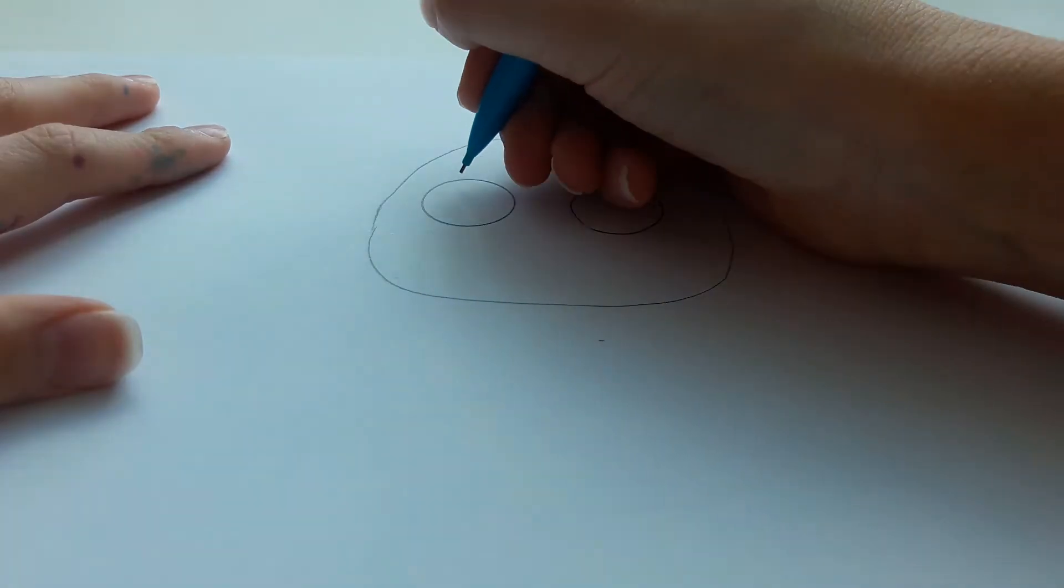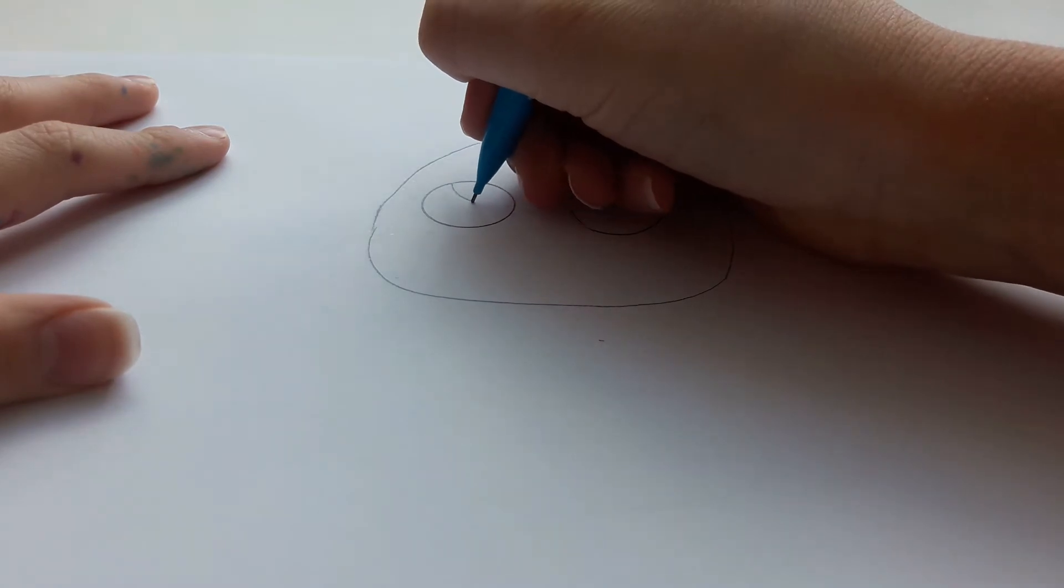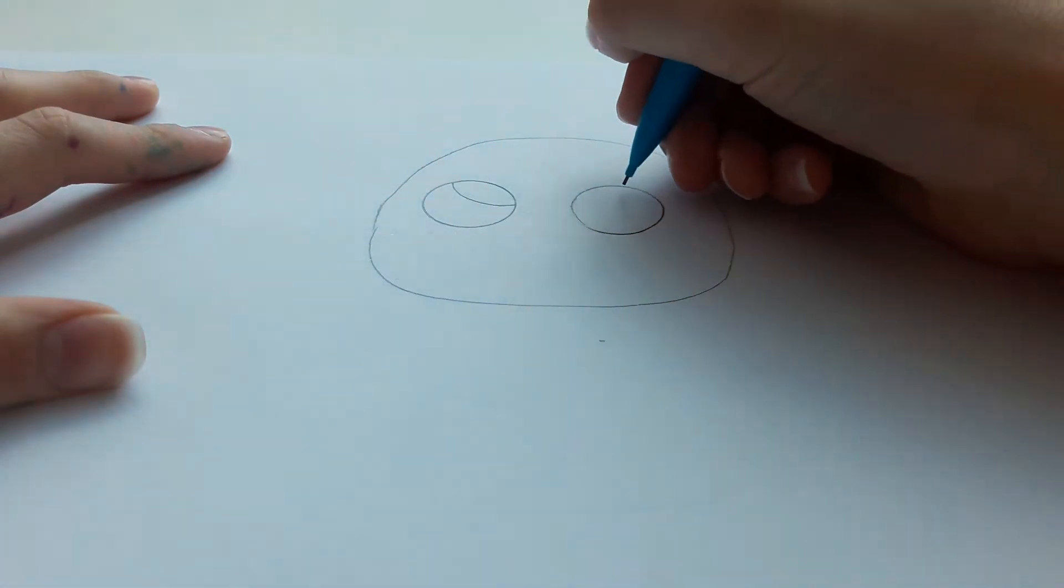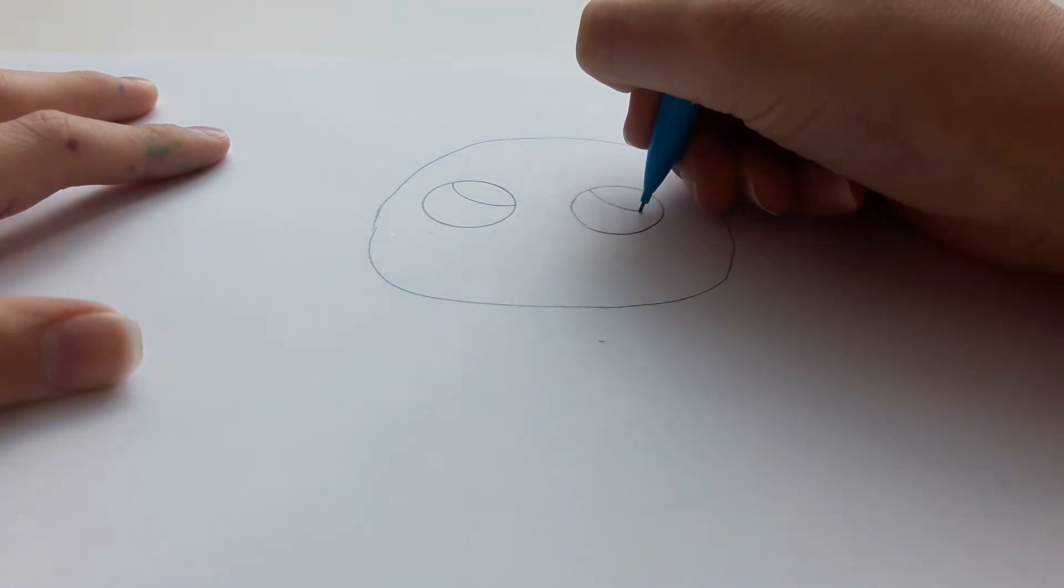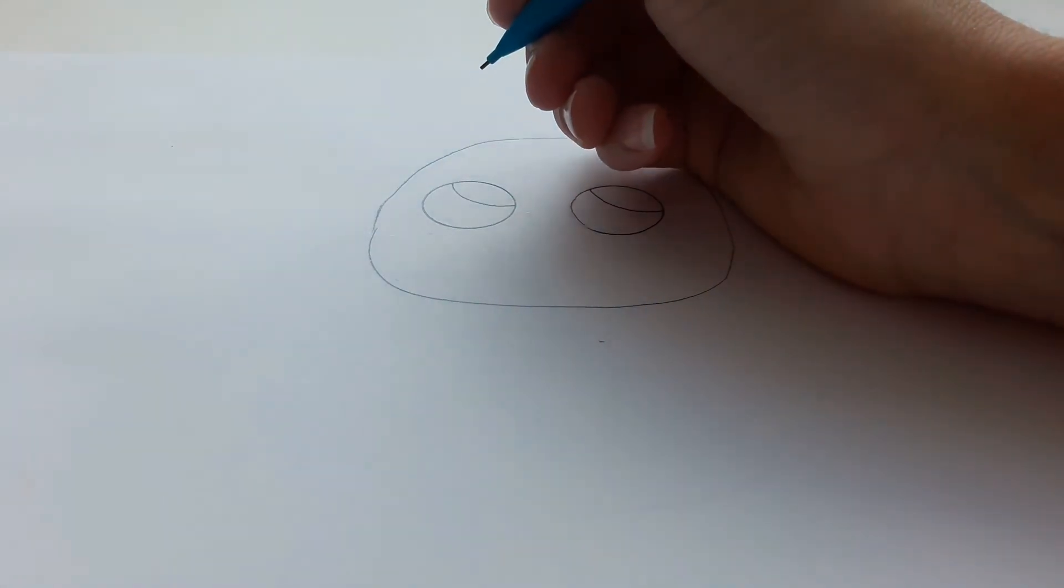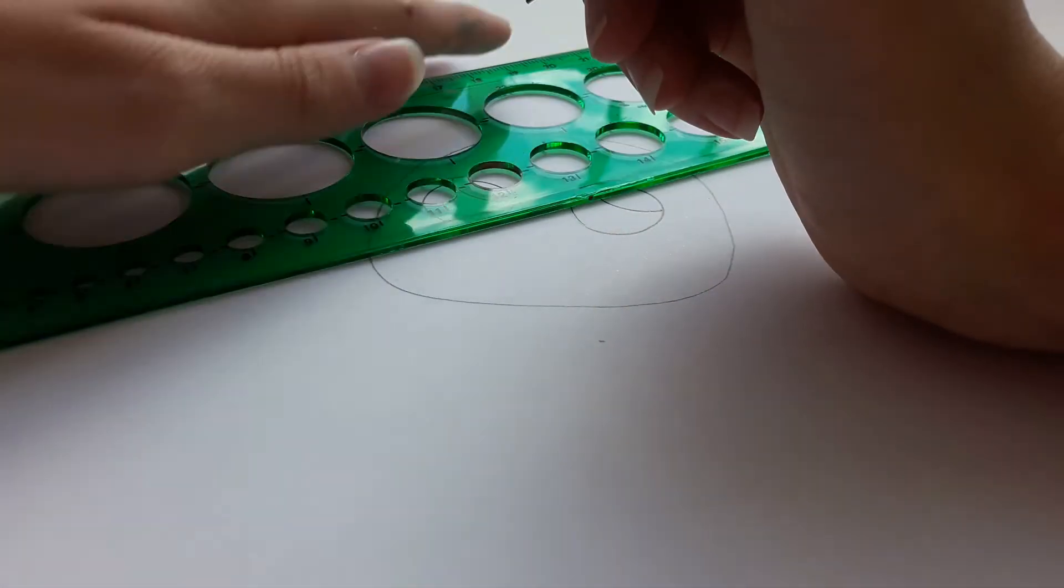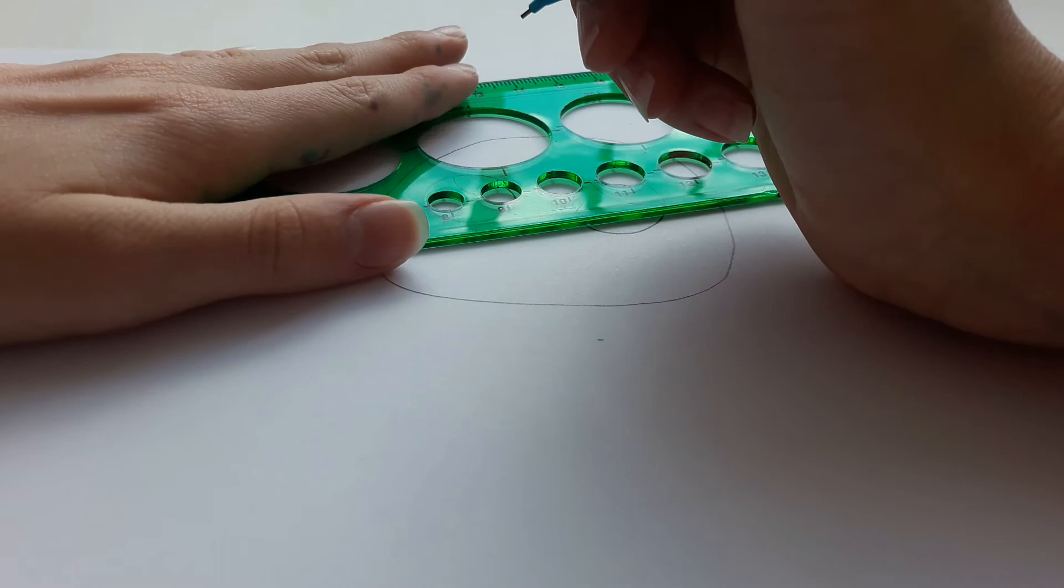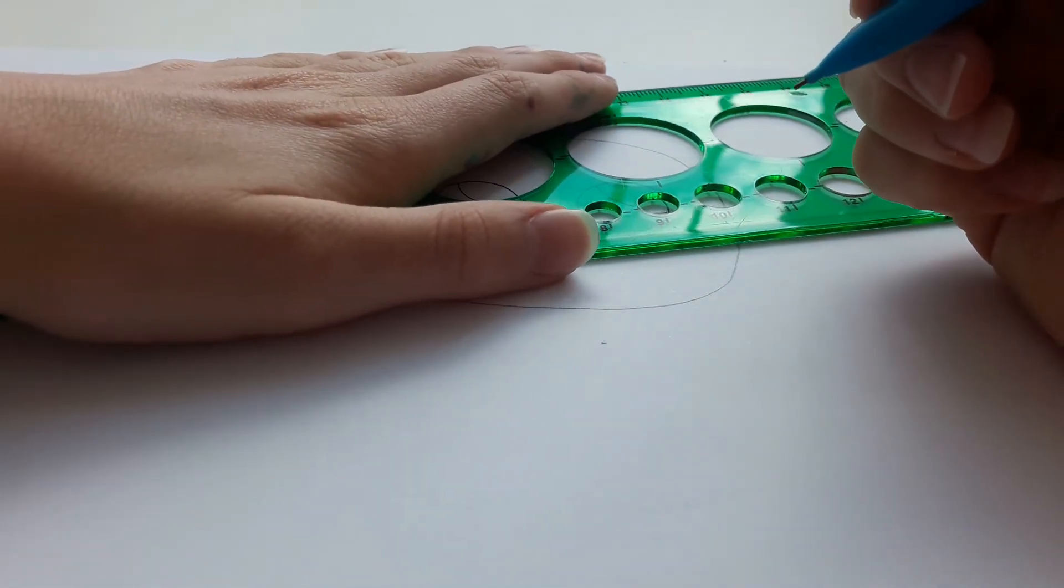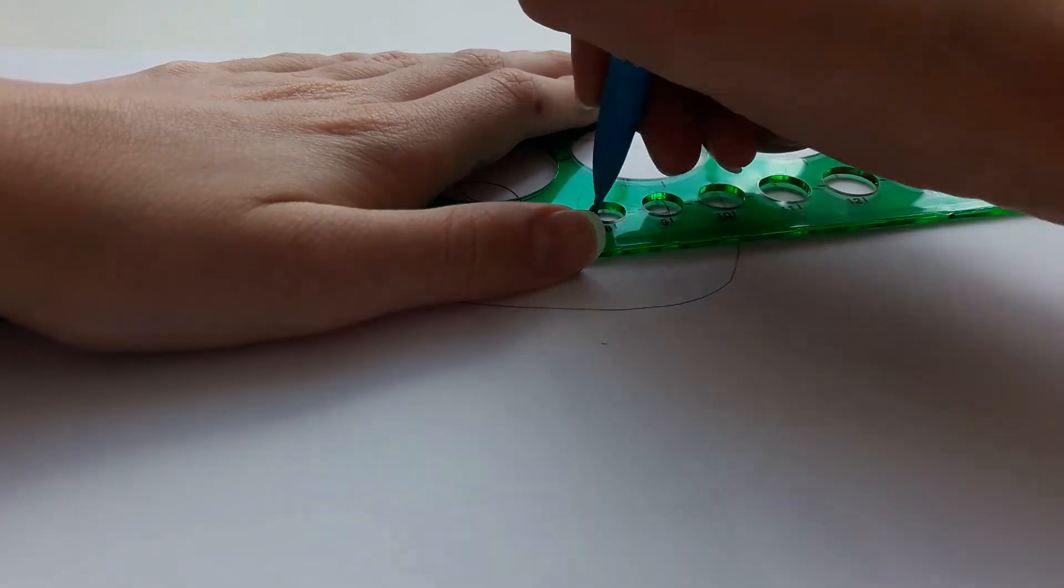Now we're going to do the inside of our eyes. We're just going to do a curve like this right here, another curve right here on the other eye, and then do one smaller circle with my circle ruler over here and same thing over here.